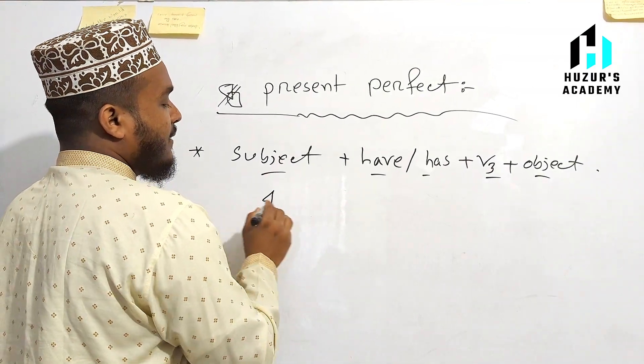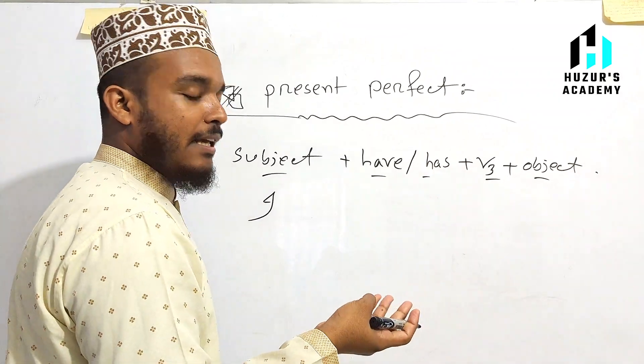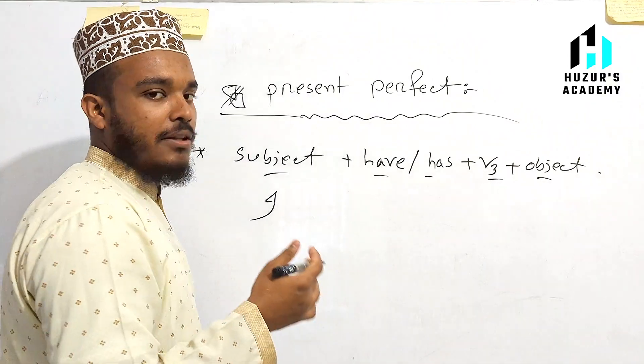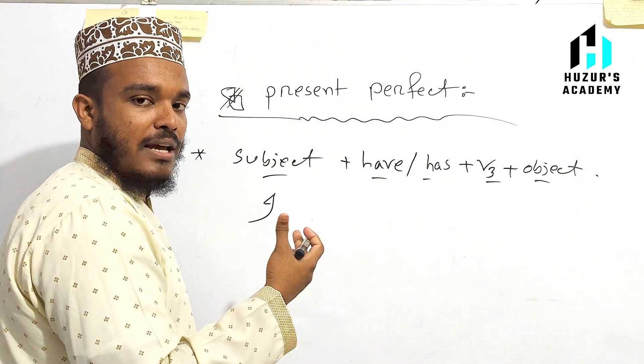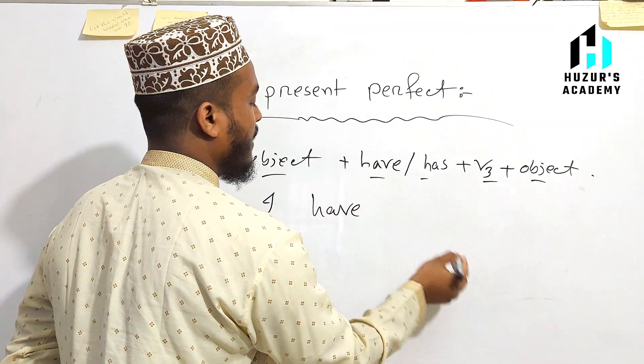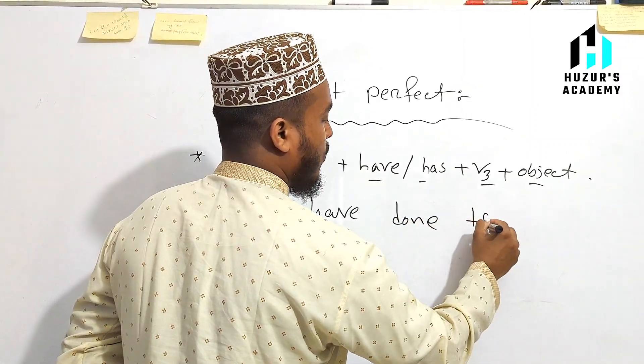Subject is I have, has he, she, it. He has done the work. And I have, verb 3 done, object the work.